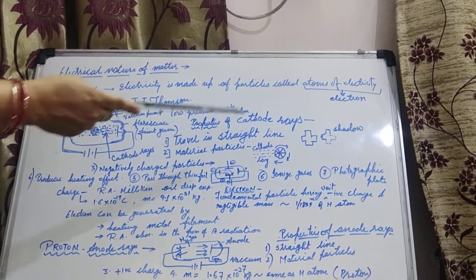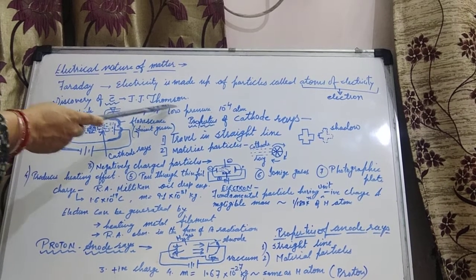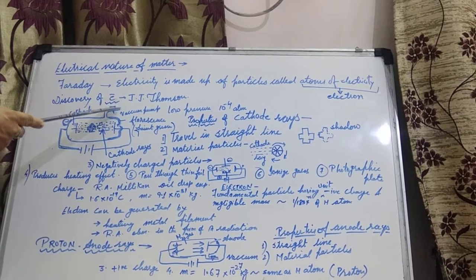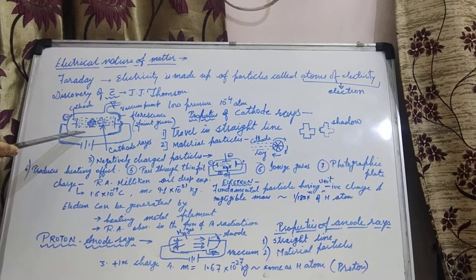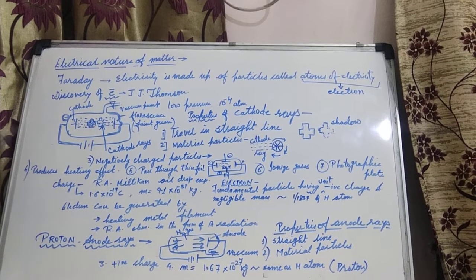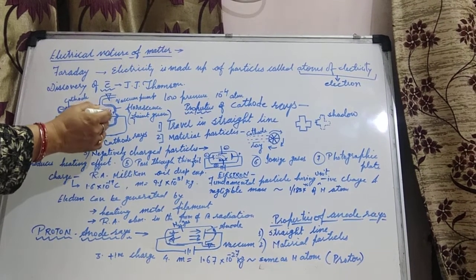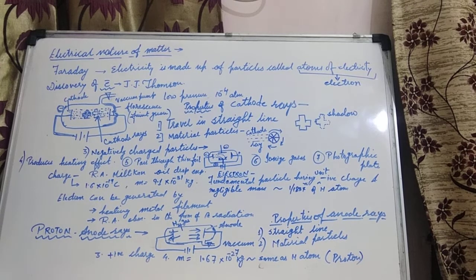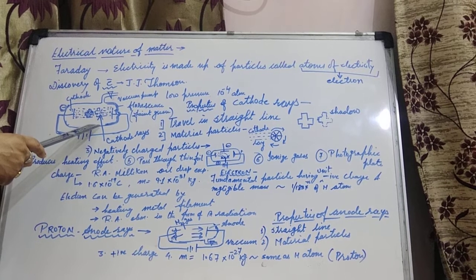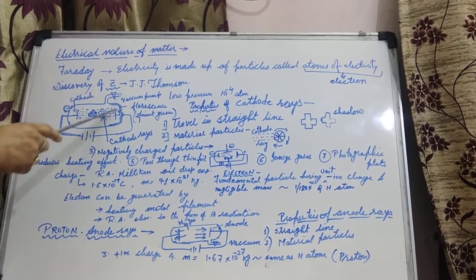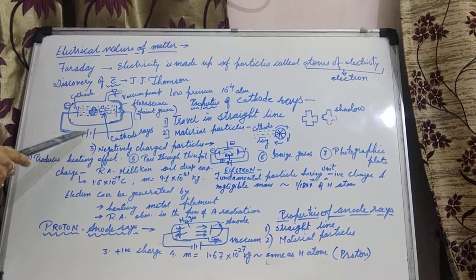As we have taken the term electron, we are now taking discovery of electron. That was done by J.J. Thomson. For the discovery of electron, he took a cylindrical thick glass tube fitted with two electrodes — cathode and anode. Negatively charged cathode and positive anode. Through vacuum pump, vacuum is created inside this discharge tube, and the electrodes are connected with high volt current — 10,000 volts.